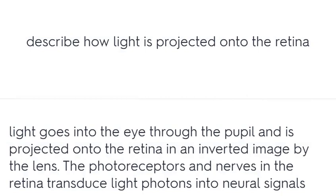Describe how light is projected onto the retina. Light goes into the eye through the pupil and is projected onto the retina in an inverted image by the lens. The photoreceptors and nerves in the retina transduce light photons into neural signals.